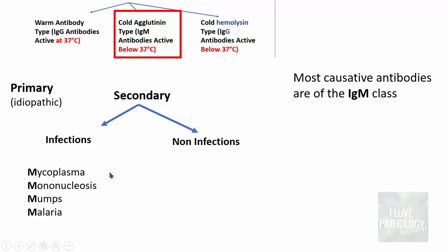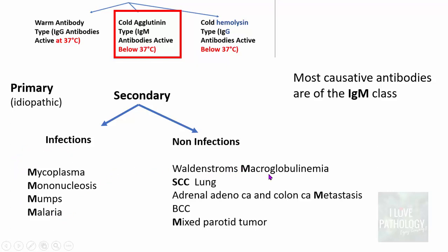Non-infectious secondary causes include Waldenström's macroglobulinemia, squamous cell carcinoma of the lung, metastasis from adrenal adenocarcinoma and colon carcinoma, basal cell carcinoma, and mixed parotid tumor. Notice there are lots of M's — IgM and all these M-diseases: mycoplasma, mononucleosis, mumps, and malaria. These are the secondary causes of cold agglutinin hemolytic anemia.